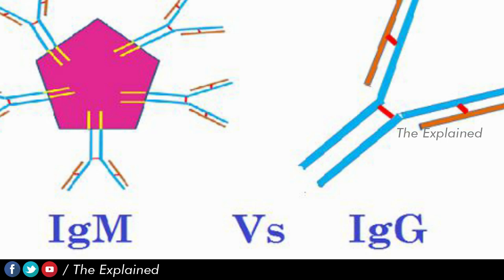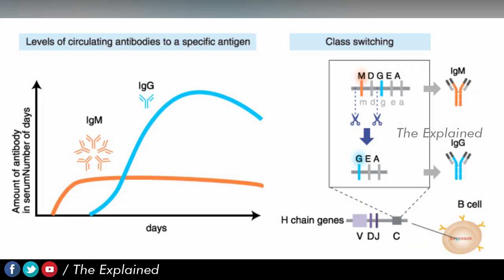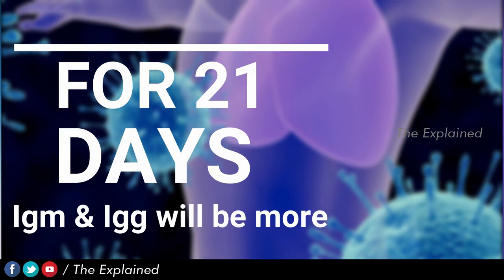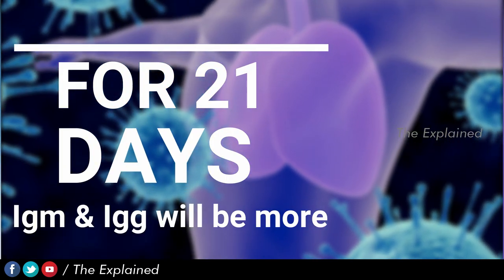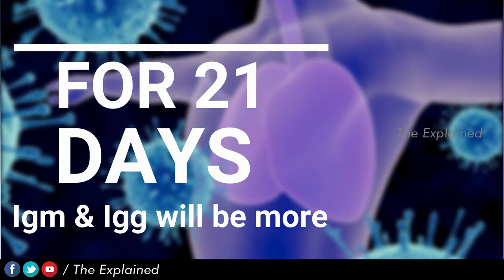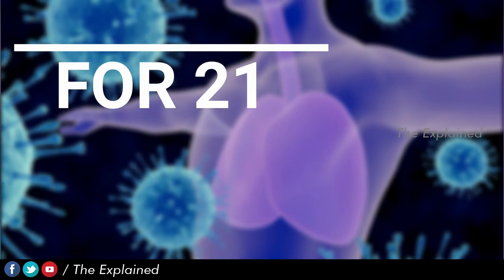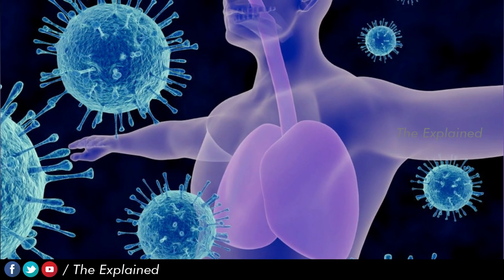The two key antibodies are IgM and IgG. IgG is particularly important. When IgM and IgG are produced in response to infection, they remain in the body as immunological memory — these are the two main antibodies.